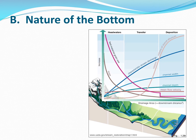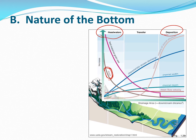The next characteristic is nature of the bottom. This is a profile of a stream from the headwaters all the way down to the ocean where it deposits everything. Headwaters are areas where streams form, usually at higher elevation. Up in the headwaters, there are higher slopes, which means those streams have higher energy. That higher energy means anything small gets carried downstream, and only things so big that the water can't move them are left behind.